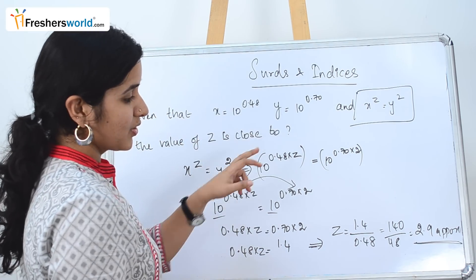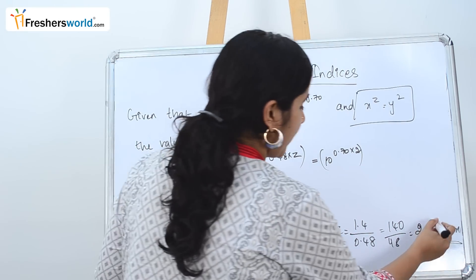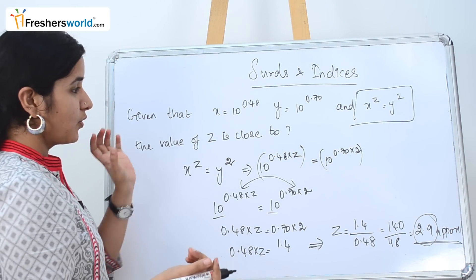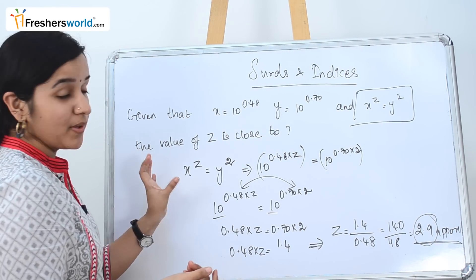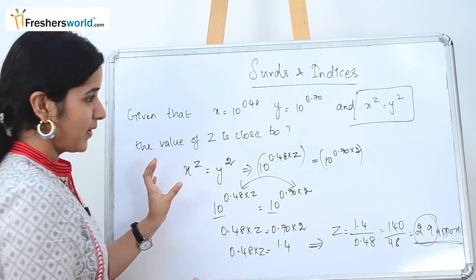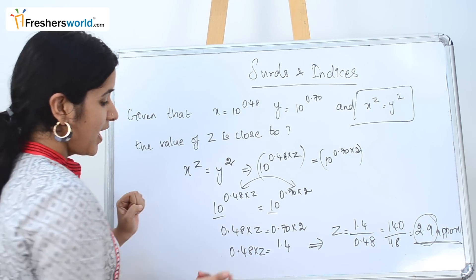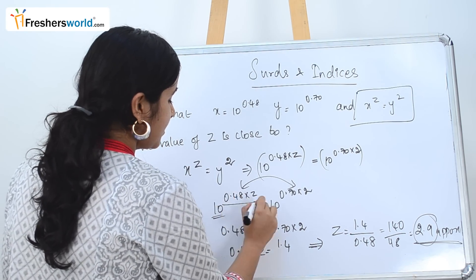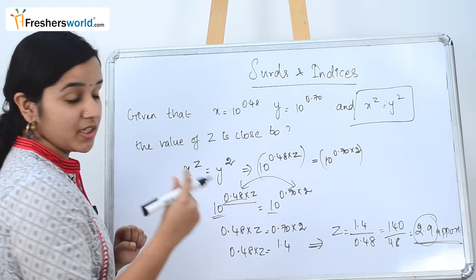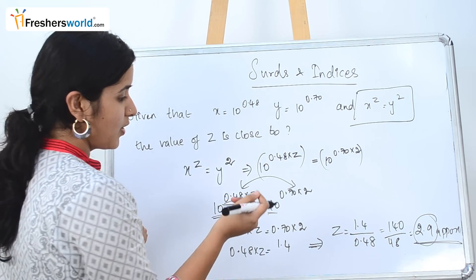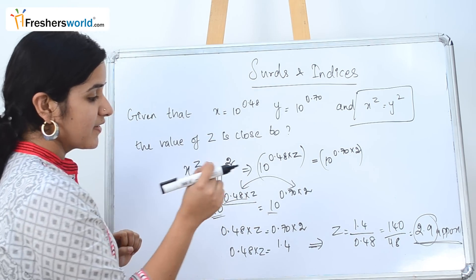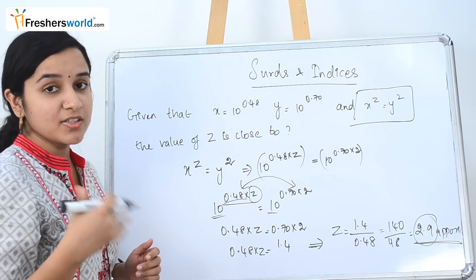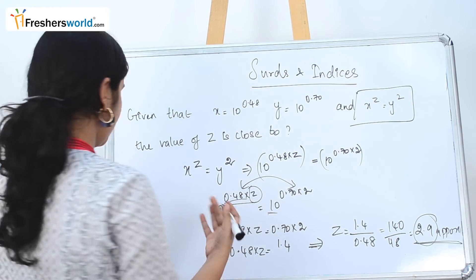The value of z is close to 2.9. What did we do here? We took the equation given in the question and substituted the values. We equated 0.48 into z equal to 0.70 into 2, and then you can easily find the value of z. Let's go to another question.